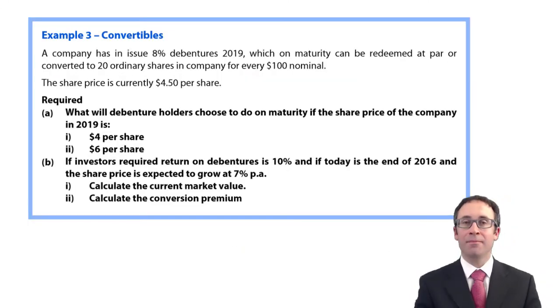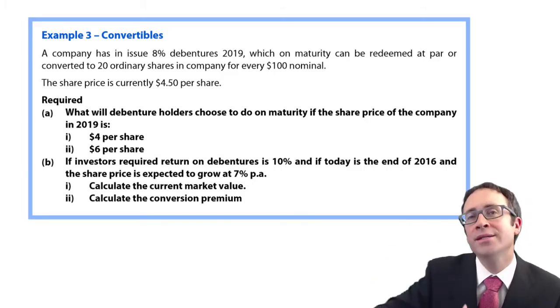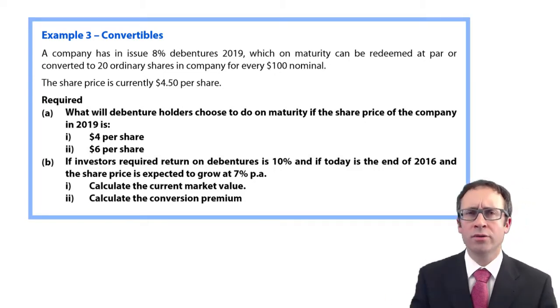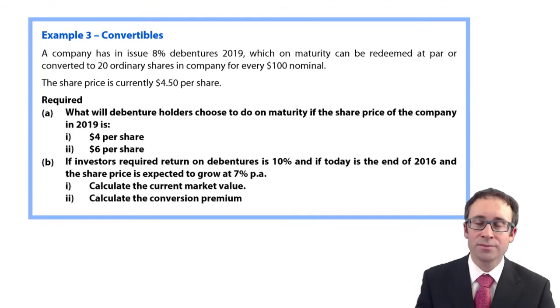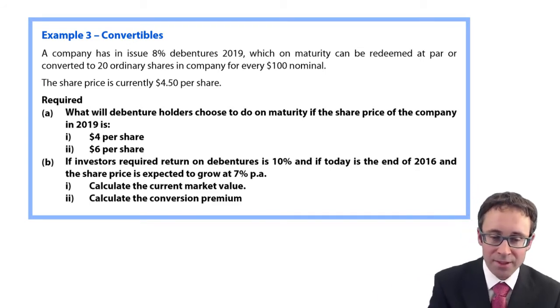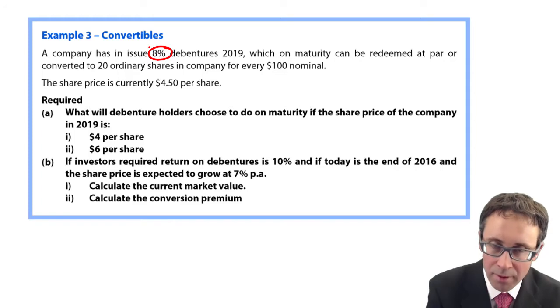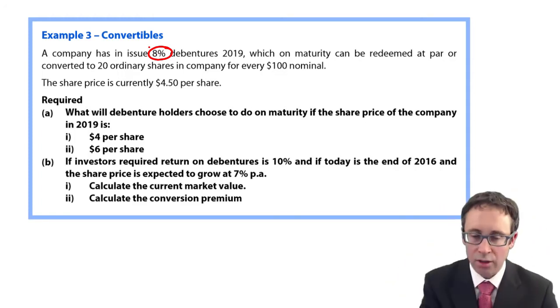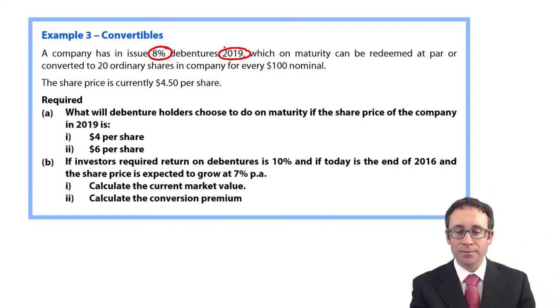So what have we got? If we look at the information, the question says that a company has issued 8% debentures. So that is the coupon rate, isn't it? So we'll be paying $8 per $100 nominal. 2019, so they are redeemable in 2019.